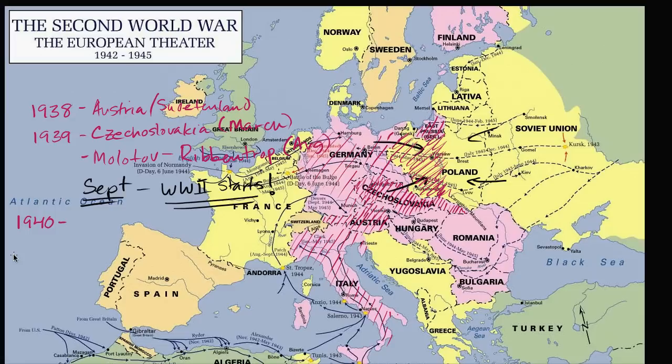In April, you have the Germans invade Denmark and Norway. Germany invades Denmark and Norway — this is April of 1940.